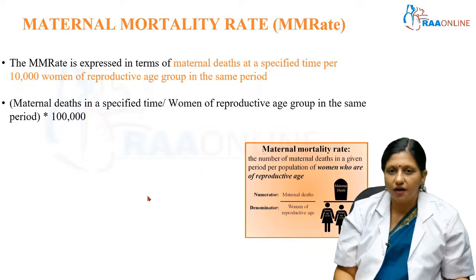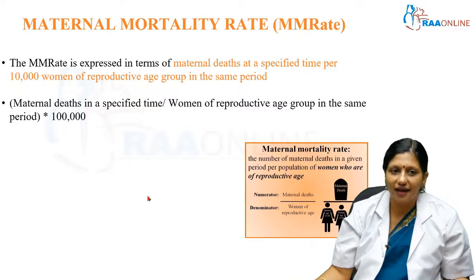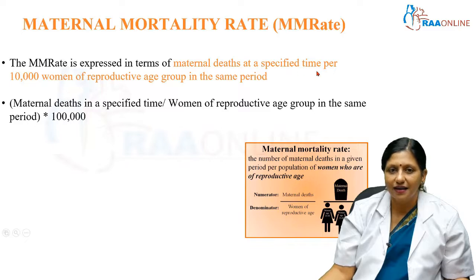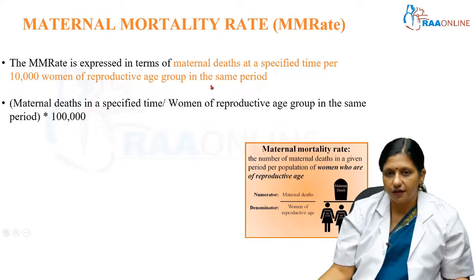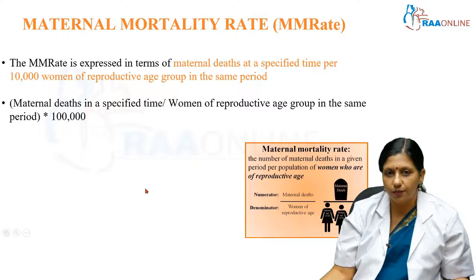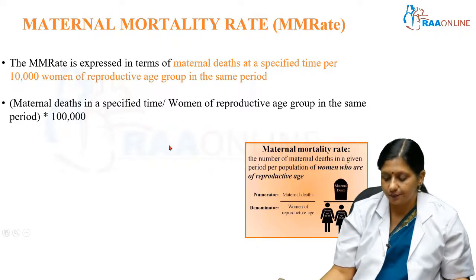Maternal mortality rate is maternal deaths per 10,000 women of reproductive age group in the same period. It is calculated as maternal deaths divided by the number of women in the reproductive age group — this is called the maternal mortality rate.